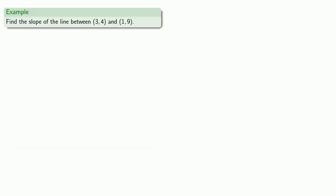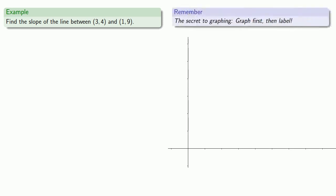For example, let's say we want to find the slope of the line between the points (3, 4) and (1, 9). Well, evidently you want to do this the easy way, so let's graph our points. Remember, the secret to graphing is graph first, then label. Our point (3, 4) is out some distance, up some distance, so we'll plot and label.